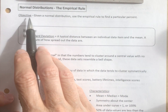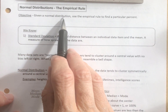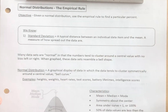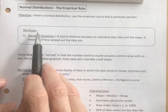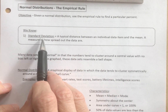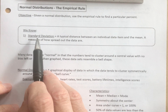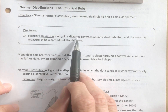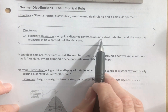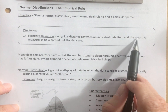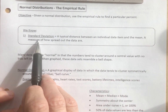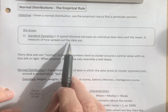Our objective: given a normal distribution, use the empirical rule to find a particular percent. So what do we know coming into this? We know what standard deviation is — standard deviation is a typical distance between an individual data item and the mean. We've also defined it as a measure of how spread out the data are.